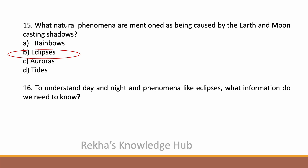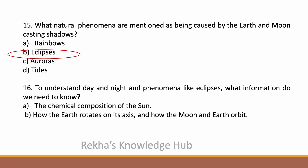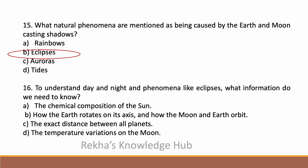To understand day and night and phenomena like eclipses, what information do we need to know? Options are: the chemical composition of the sun, how the earth rotates on its axis and how the moon and earth orbit, the exact distance between all planets, or the temperature variations on the moon. The correct answer is option B: how the earth rotates on its axis and how the moon and earth orbit.